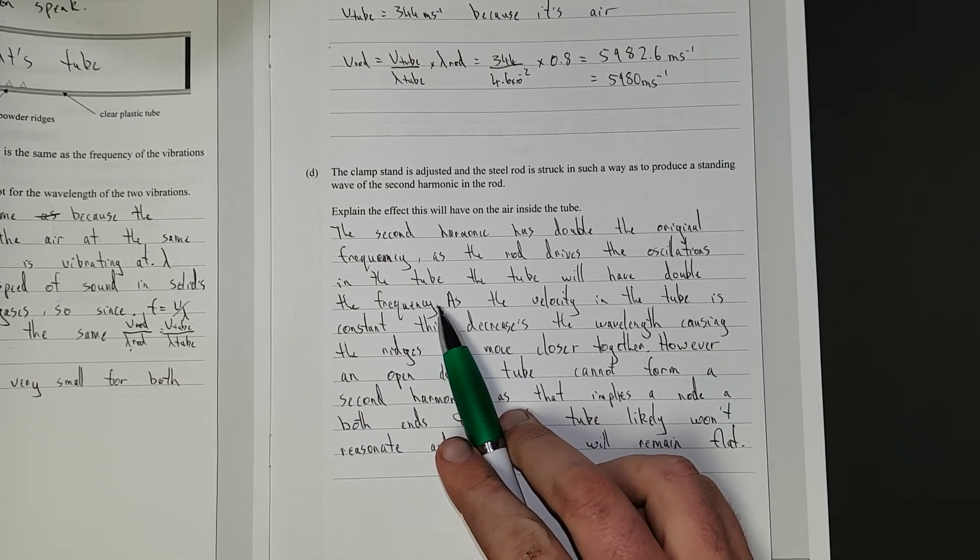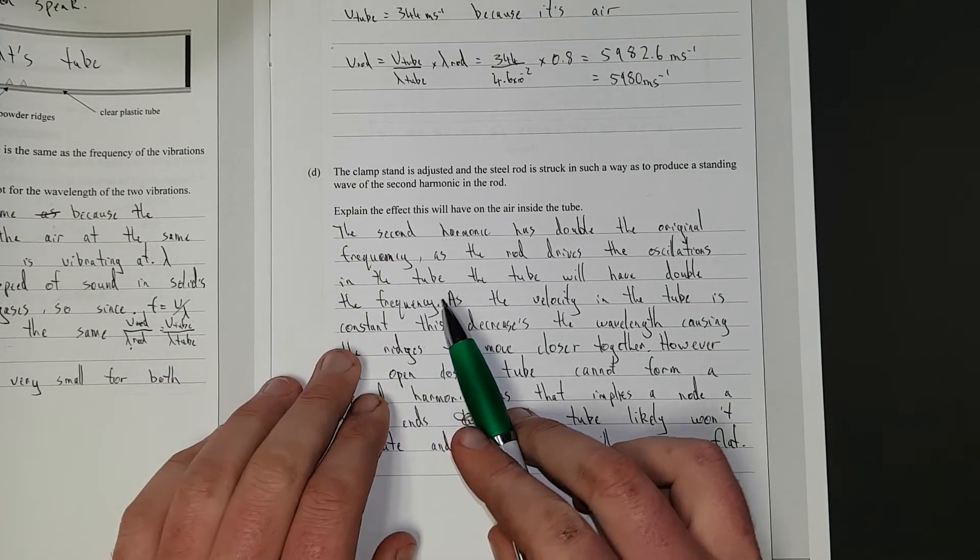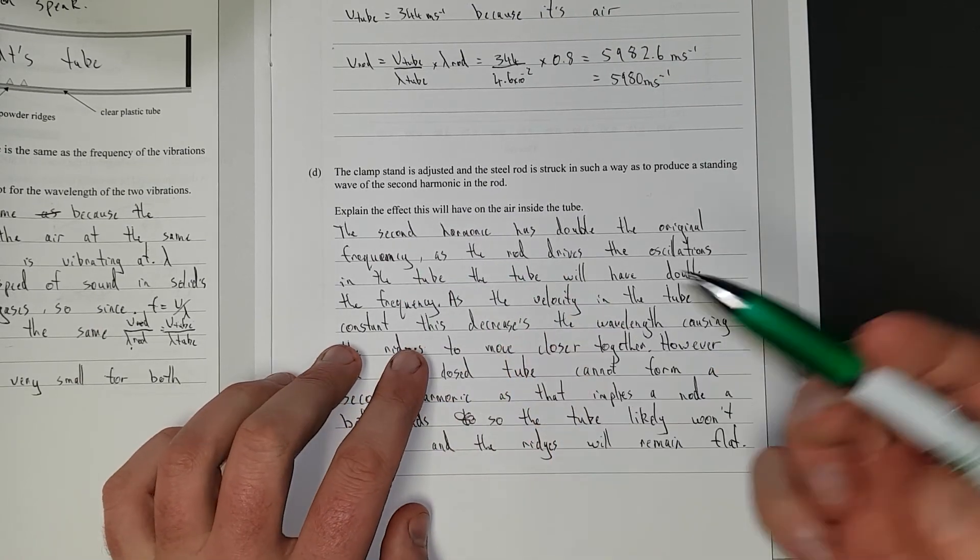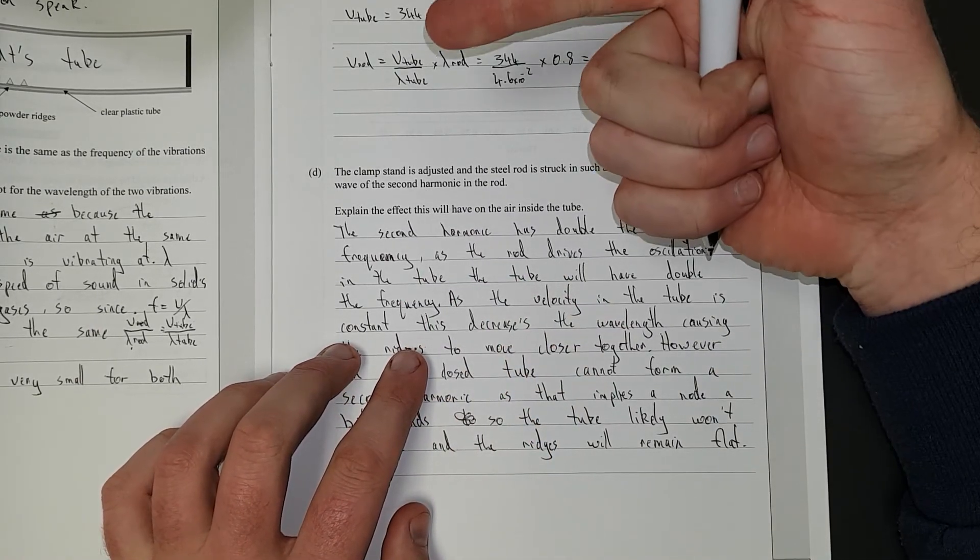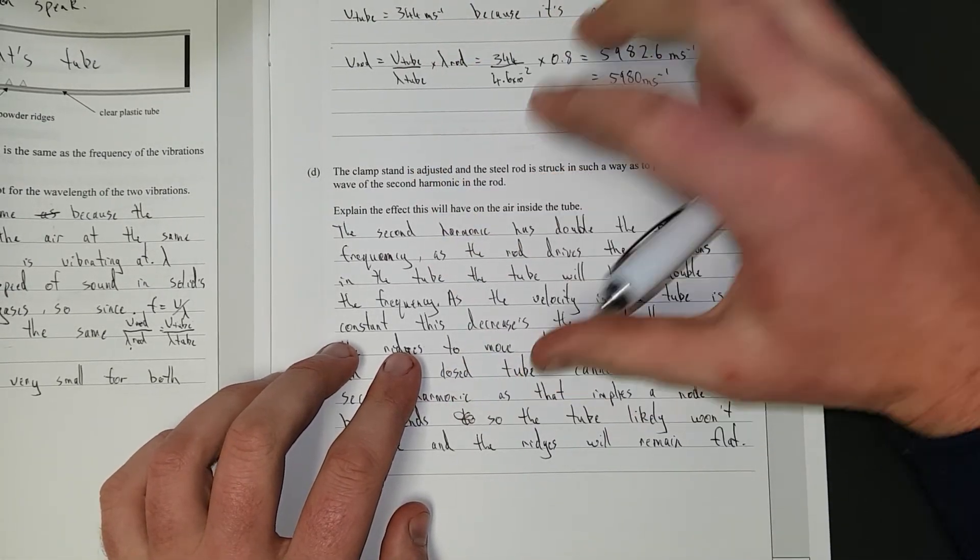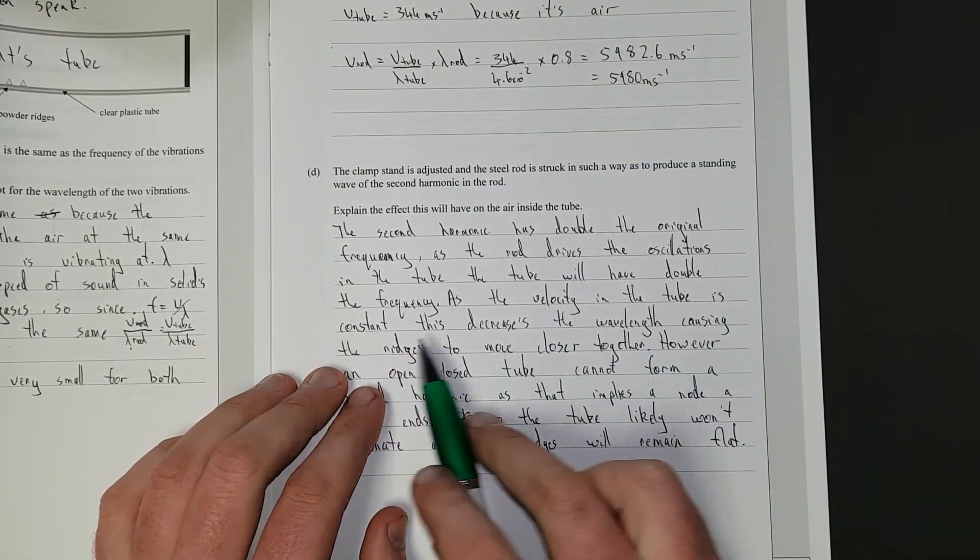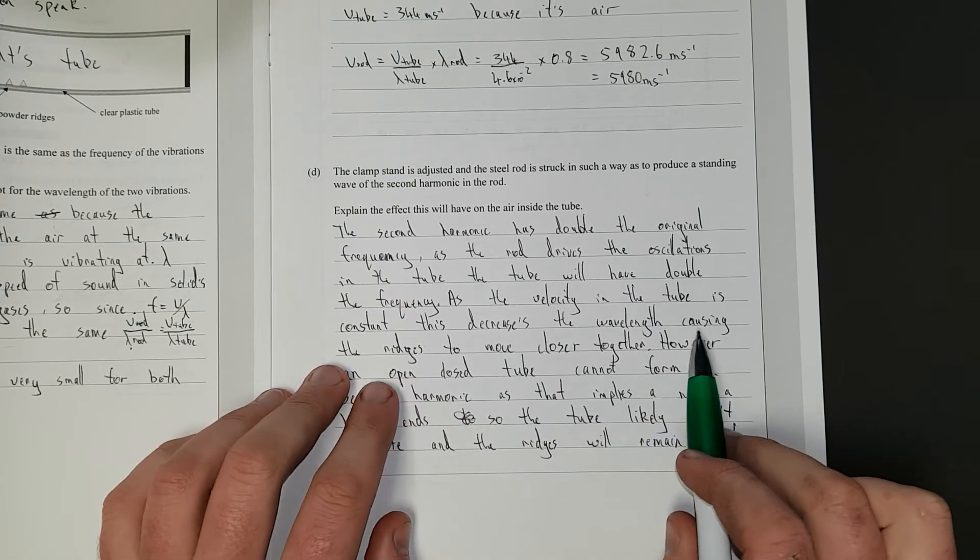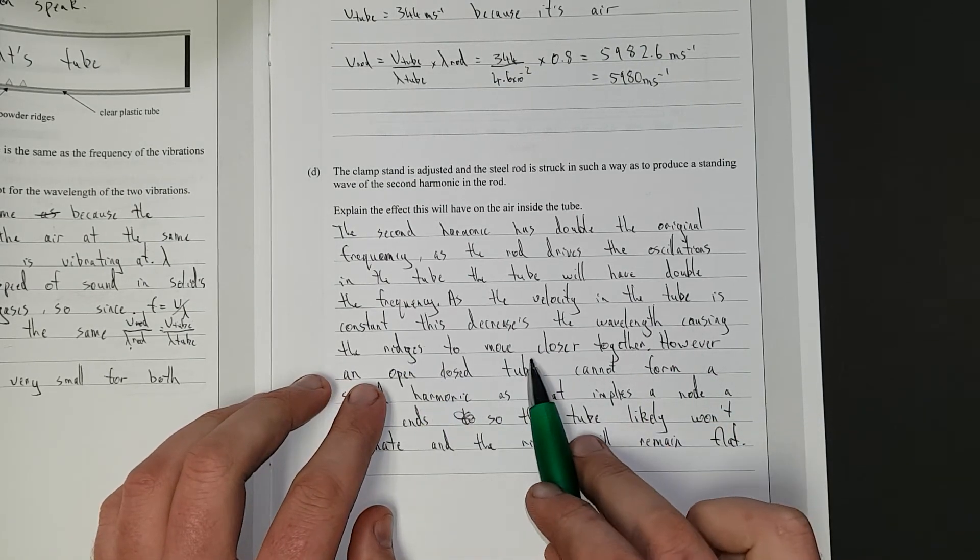It sounds really obvious, but you need to say it because it's asking about what happens to the air inside the tube. So cover the frequency, cover the wavelength, cover the velocity. Those are three things that can happen in the tube. So as the velocity in the tube is constant, this decreases the wavelength, causing the ridges to move closer together.